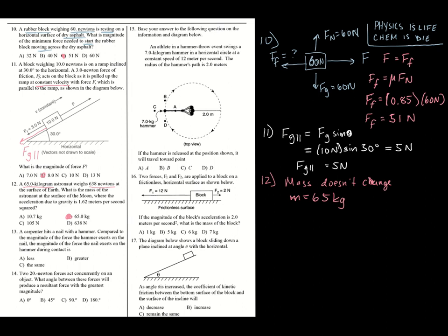Number thirteen: a carpenter hits a nail with a hammer. Compared to the force the hammer exerts on the nail, what is the force the nail exerts on the hammer? It's the same force — because of Newton's third law. Different accelerations result from different masses, but the force between the two objects is equal in magnitude.